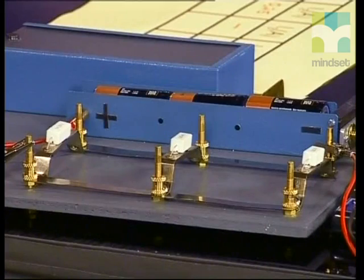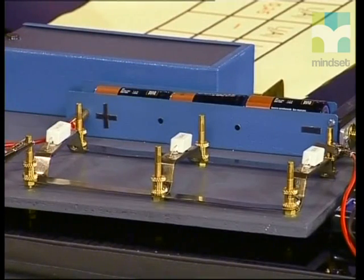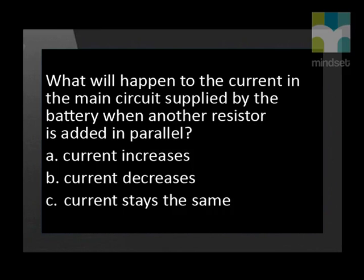Now let's investigate the effect on electric current when I add more resistors in parallel. Here's our circuit board, and I've added a third resistor — a 10 ohm resistor — to my circuit. I now have three resistors in parallel. Before we take any readings, I want you to think about this: what will happen to the current in the main circuit when another resistor is added in parallel? A — the current increases, B — the current decreases, or C — the current stays the same.